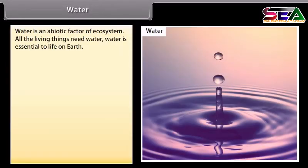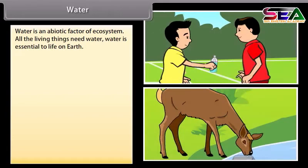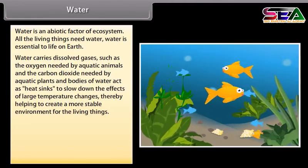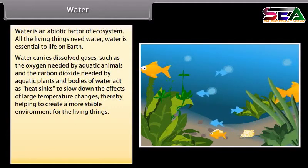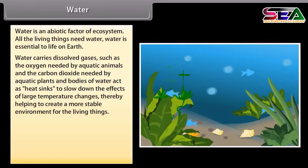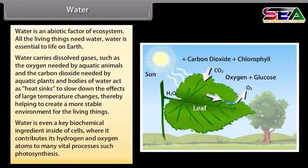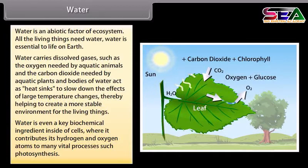Water is an abiotic factor of the ecosystem. All living things need water — it is essential to life on earth. Water carries dissolved gases such as the oxygen needed by aquatic animals and the carbon dioxide needed by aquatic plants. Bodies of water act as heat sinks to slow down the effects of large temperature changes, helping create a more stable environment. Water is also a key biochemical ingredient inside cells, contributing its hydrogen and oxygen atoms to vital processes such as photosynthesis.